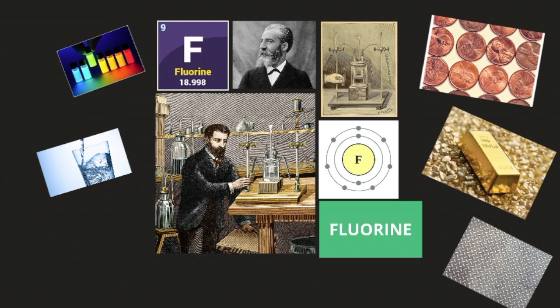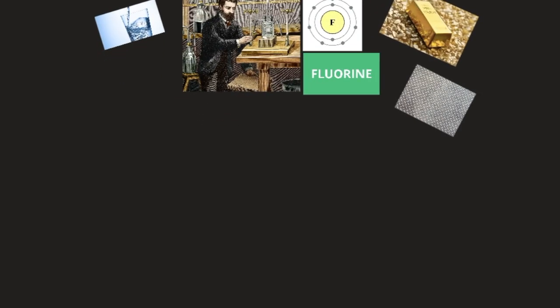It wasn't until Henri Moissan succeeded that he won the Nobel Prize in 1906 for isolating fluorine through a process that could be replicated safely. Now we're going to look at the people who came before him — analyzing their processes, progress, and successes and failures in attempting to isolate fluorine in its pure elemental state.